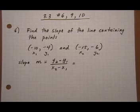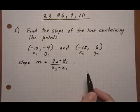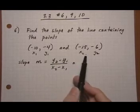3.3, numbers 6, 9, and 10. All three of these problems want us to find the slope of a line, given that it's going through two points.